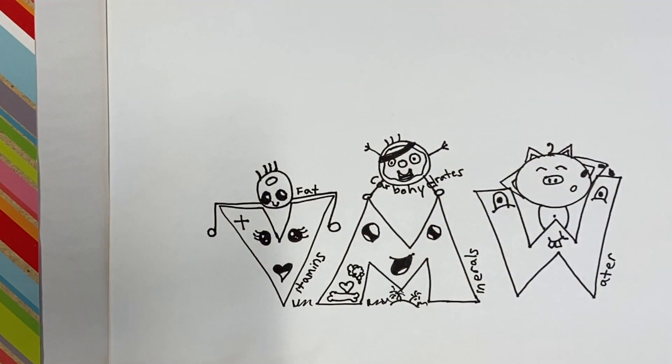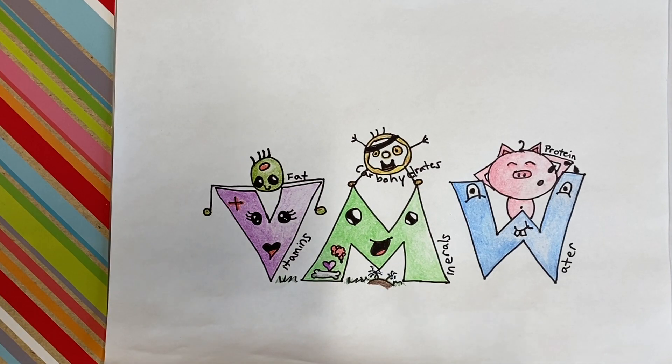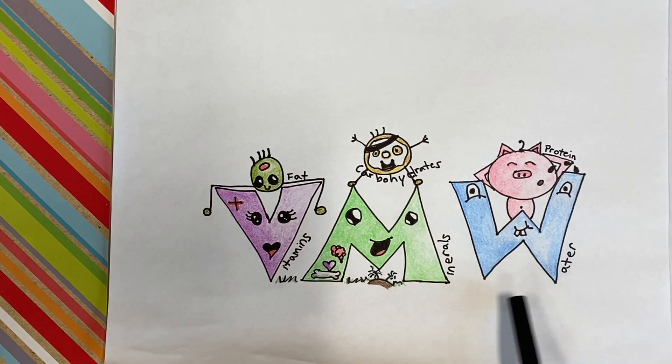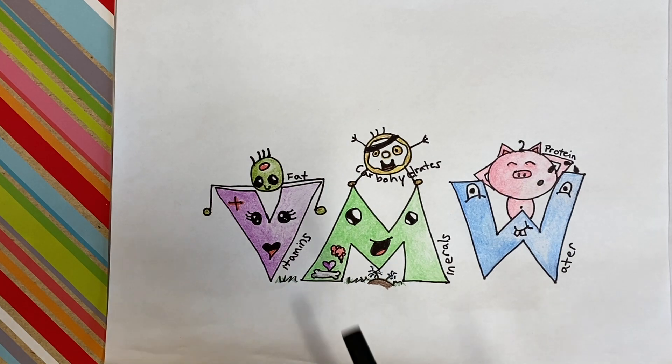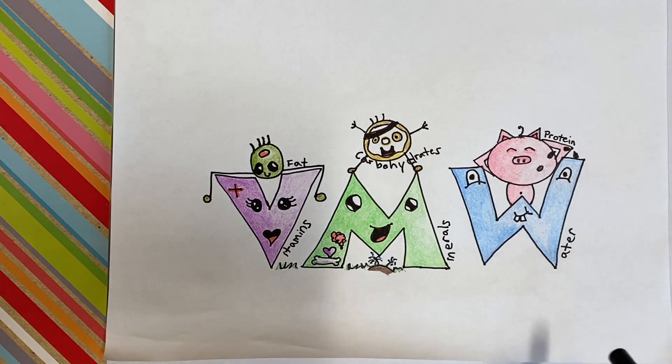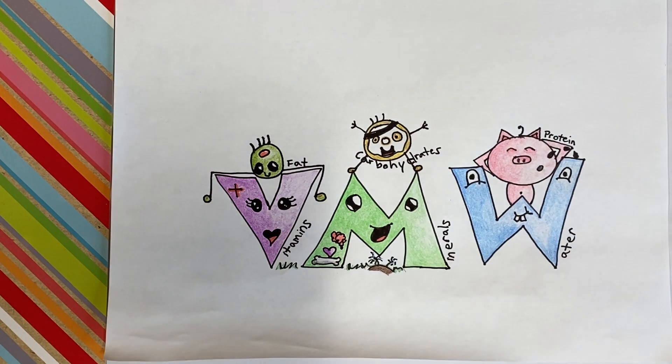And these are the six essential nutrients that your body needs. Let's just recap what we learned. We have vitamins, minerals, and water. None of these essential nutrients will give you any calories or energy. Calorie is a unit of energy. We have fat, carbohydrates, and protein. Make sure you write protein. I forgot earlier.